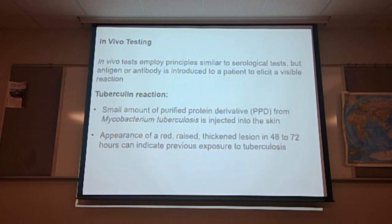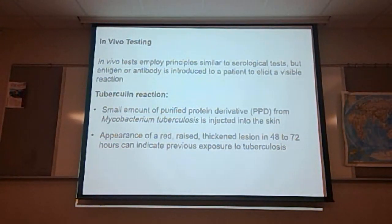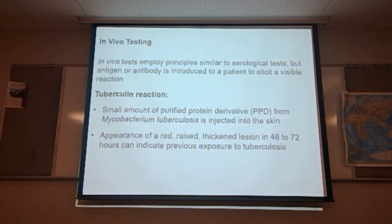In vivo testing employs principles similar to serological tests, but the antigen or antibody is introduced to a patient to elicit a visible reaction — we're working inside the body. A classic example is the tuberculin reaction, where a small amount of purified protein derivative from Mycobacterium tuberculosis is injected into the skin. If you've ever had a TB skin test, this is the type of test it is.